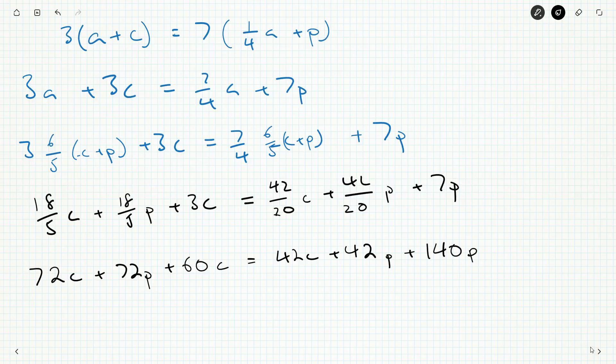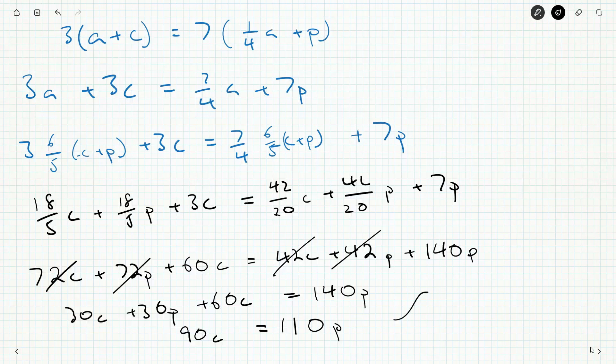All right, so some things can cancel. Get these 42's out of here and these will both turn into 30 C and 30 P. Well, 140 P over here. So this will be 90 C and then subtract the 30 from over there, 110 P. So if I have, actually, let's just simplify this. The amount of corn is 110 over 90 P or 11 ninths P. So another way to say that is the ratio of C to P is 11 over 9 to 1 or 11 to 9.